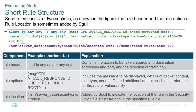The rule location, shown in purple, is added by Sguil to indicate the location of the rule in the Security Onion file structure. So we have the rule header in blue, the rule option in green, and the rule location in purple.